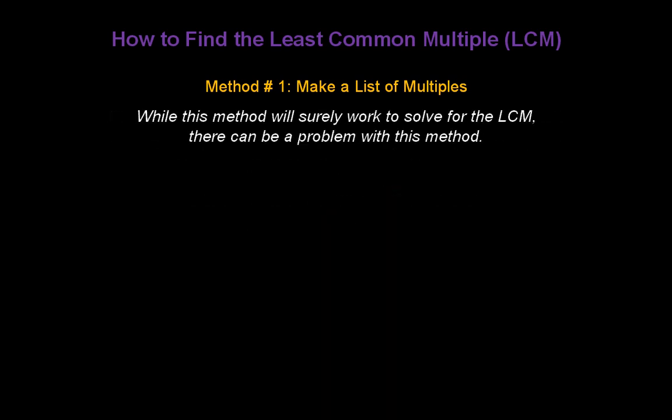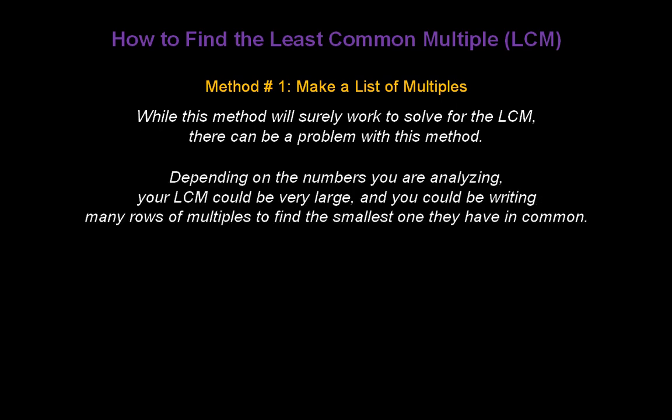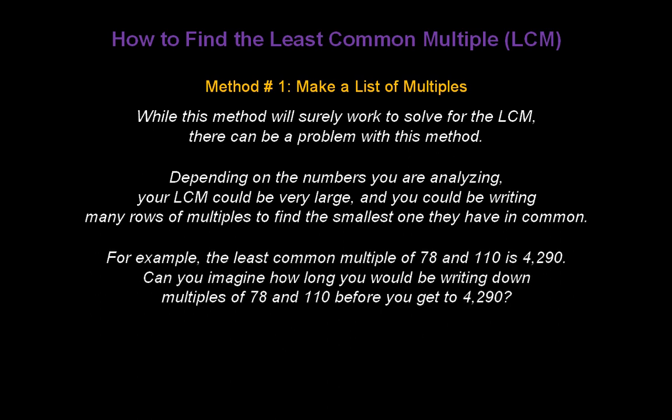Now, this method will surely work to solve for the least common multiple, but there can be a problem. Depending on the numbers you are analyzing, your LCM could be very large, and you could be writing many rows of multiples just to find the smallest one they have in common. For example, the least common multiple of 78 and 110 is 4,290. Can you imagine how long you'd be writing down multiples of 78 and 110 just to get to 4,290? So, let's take a look at an easier method.